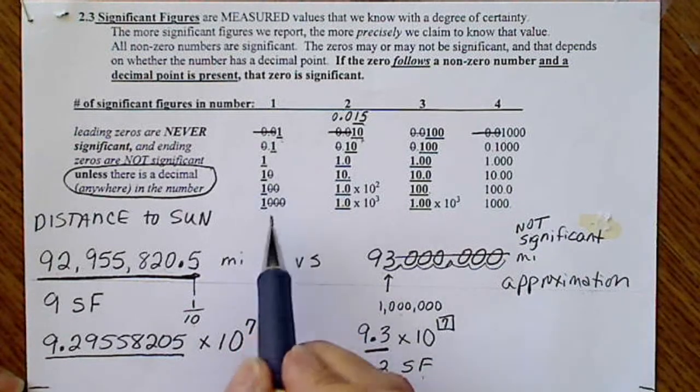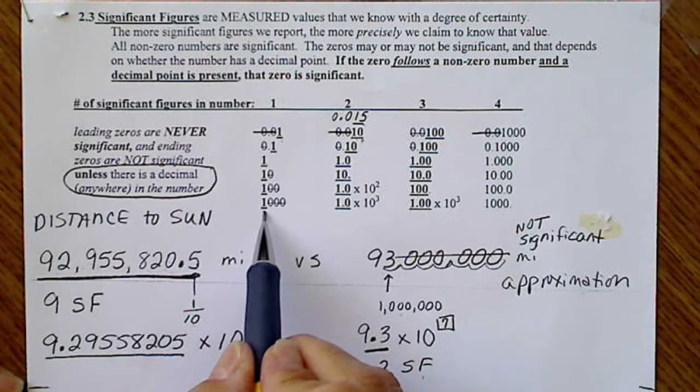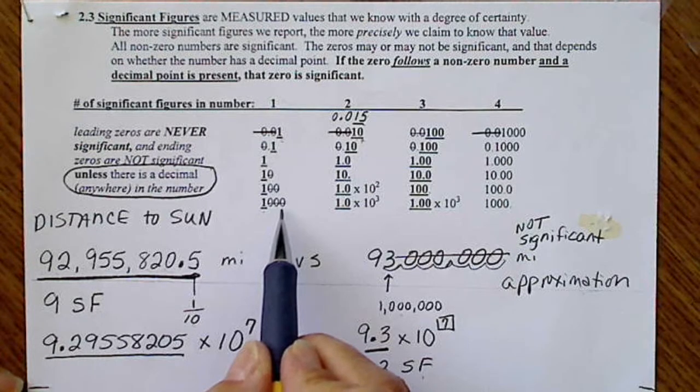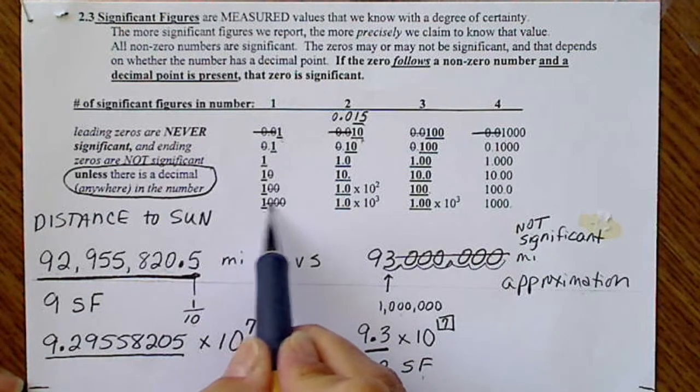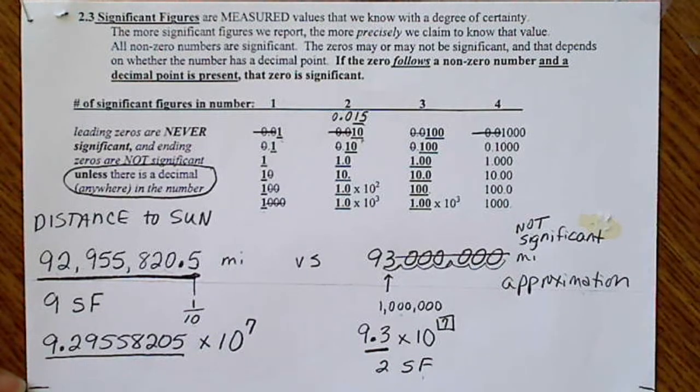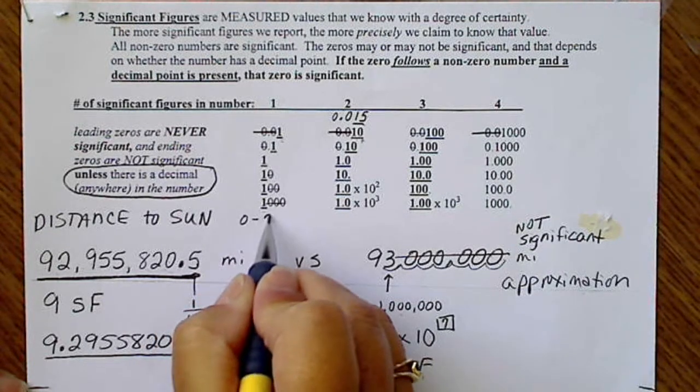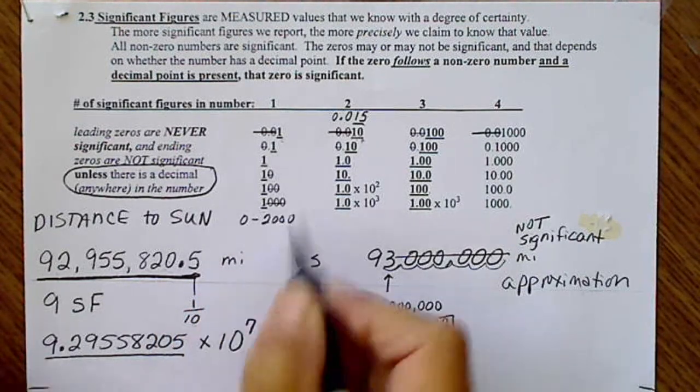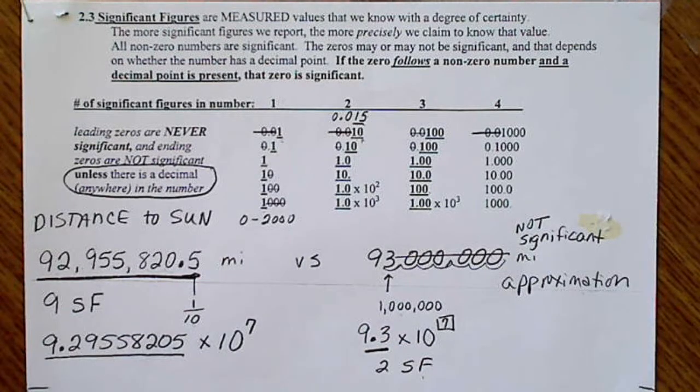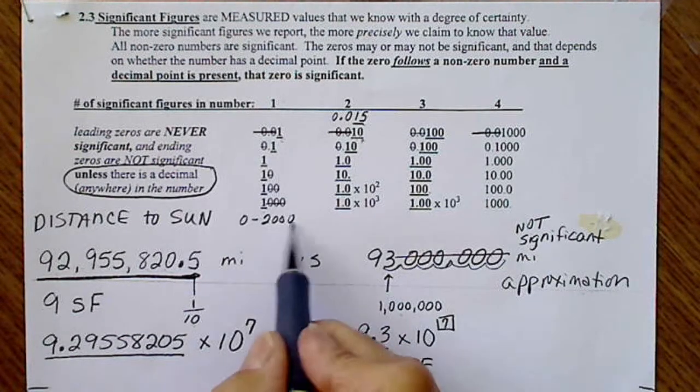So if I go down here, this is the number 1,000. There is no decimal in the number. That's why those zeros don't tell us anything. So this number is somewhere between 0 and 2,000. In other words, we have kind of a large error in that number.